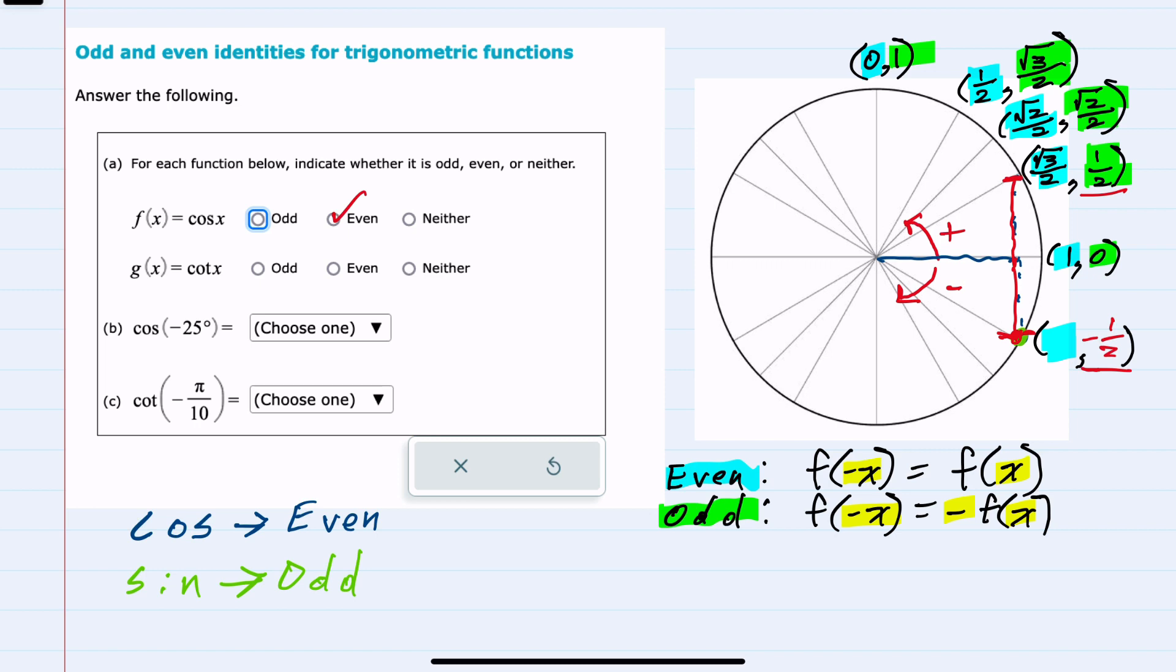The second question is about cotangent. We recall that cotangent is cosine over sine. So if we were to substitute in a negative x, we know that the cosine, when we substitute in a negative x, it would be the same. It would still give us cosine. Cosine has even symmetry. But in the denominator, that has odd symmetry. So this would be the negative of sine. So we can see that cotangent has odd symmetry. Substituting in a negative gives us the opposite of substituting in a positive.